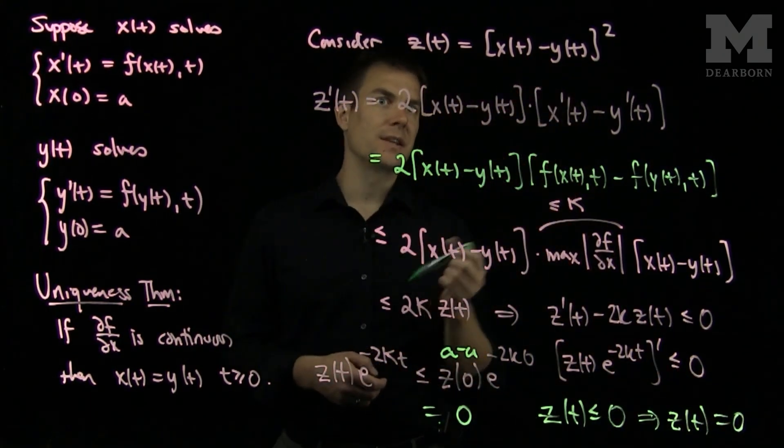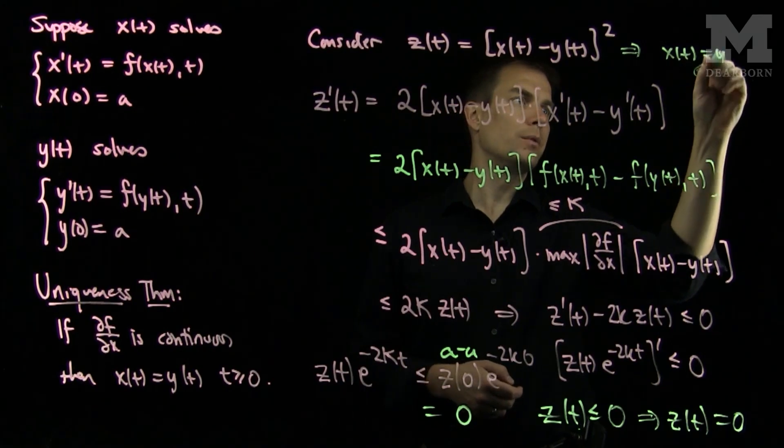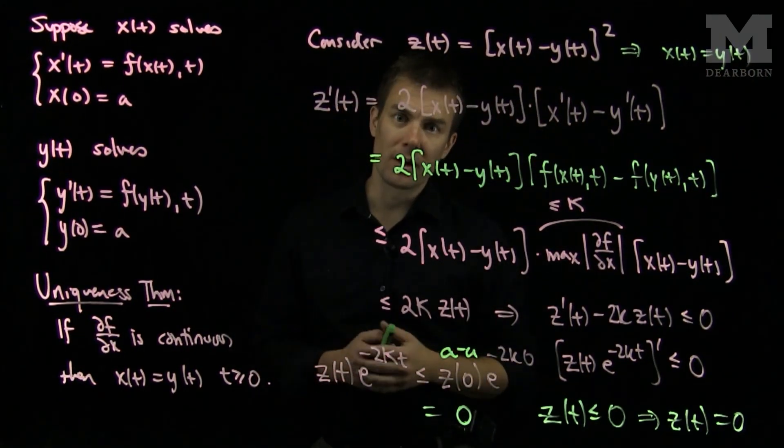And, if z of t is equal to 0, that says that x of t is equal to y of t. And, that proves our uniqueness result. Thank you very much.